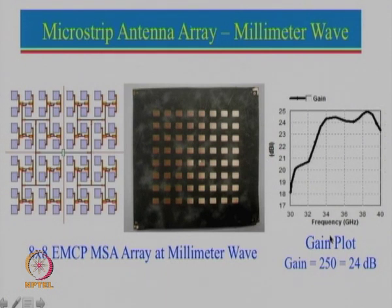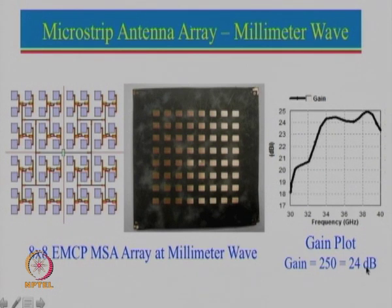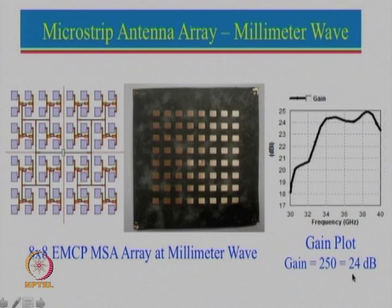Here is the gain plot: one can see that from 34 GHz to close to 39 GHz, the gain is more than 24 dB, which is equivalent to about 250. In the previous case for a single antenna, the gain was between 6 to 7 dB. Now we can see that the gain is about 24 dB. By using a large number of array elements, one can actually get a larger gain.